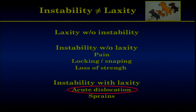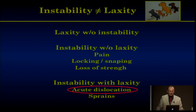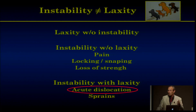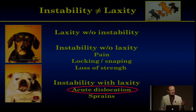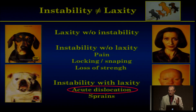Instability is a functional sign — it's when you have some giving way. It's not always due to laxity, which means a disruption or enlarged stretching of the ligament. You can have laxity without instability, for instance in Marfan disease. You can have instability without laxity, due to pain or a loose body inside the joint. And you can have instability with laxity together, as in an acute dislocation. It's very important to make this difference — they look similar but are clearly different.